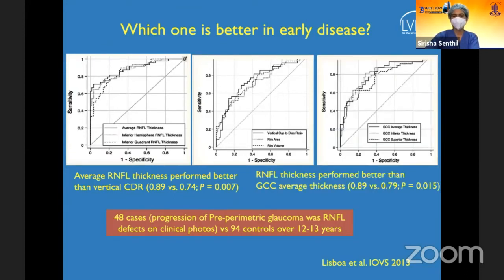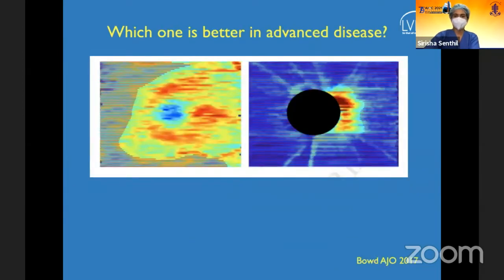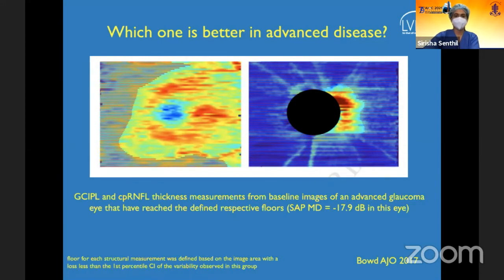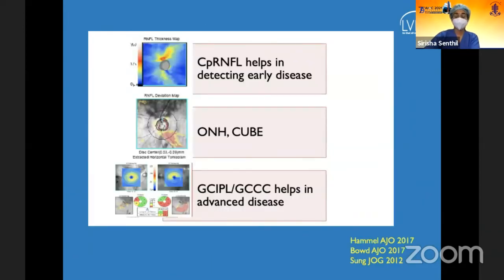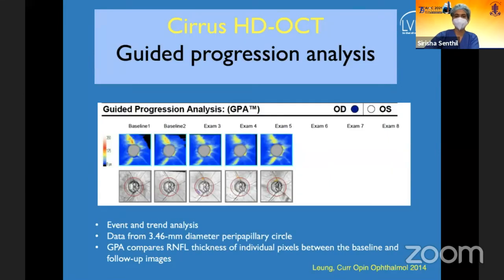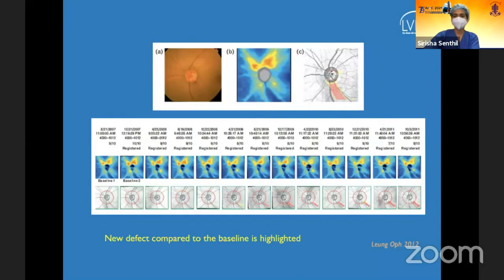RNFL thickness performs much better than GCC in early disease detection. In advanced disease, however, RNFL is difficult to use due to the floor effect. Just as 10-2 perimetry is used for advanced disease, GCC analysis is important for advanced glaucoma — especially when MD is worse than minus 17 dB, where RNFL analysis may fail to detect change even with up to 10 dB of additional loss.